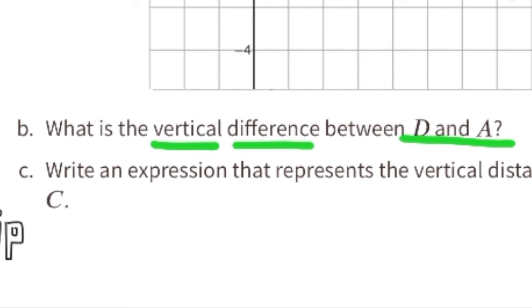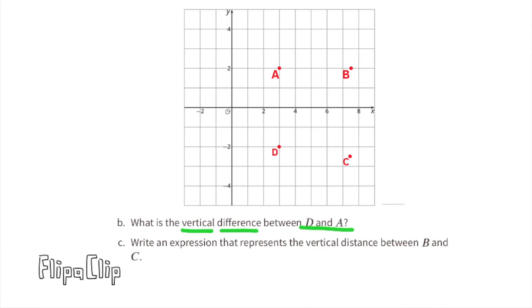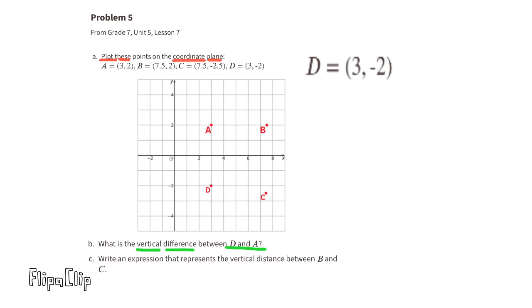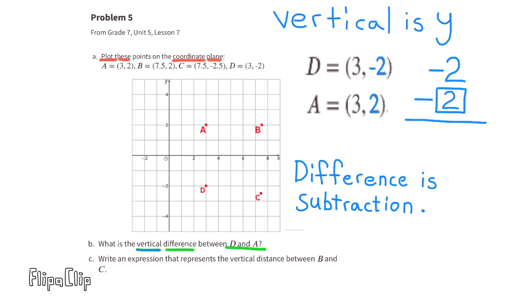Part b: what is the vertical difference between point D and point A? The question asks for the vertical difference, and difference means subtraction. That's the y-value for D minus the y-value for A. Since the y-value for D is −2 and the y-value for A is 2, we have −2 minus 2 equals −4. The vertical difference between point D and point A is negative 4.